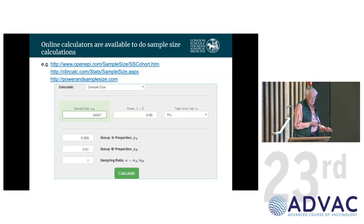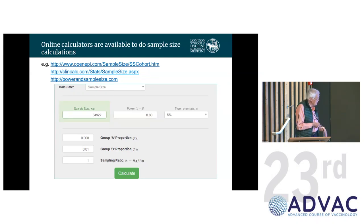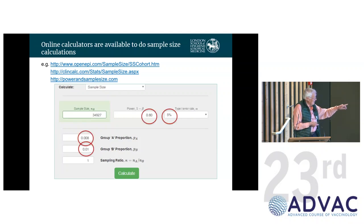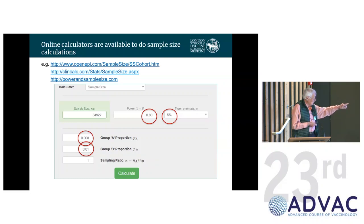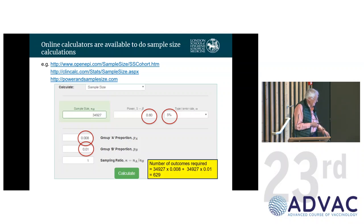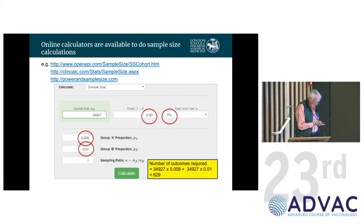You don't need to use the formulas manually — there are various online calculators where you enter the power, p-value, and the proportions developing disease in each group, press calculate, and it gives you the number of person-years of observation required. It's easy to do and gives results consistent with the formula.